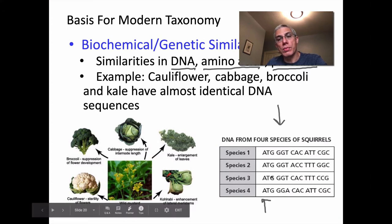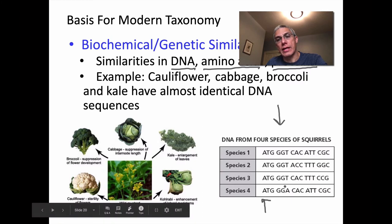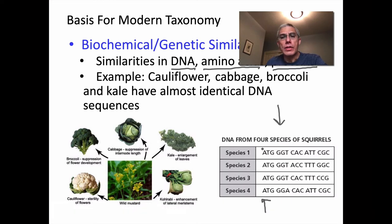When you do a genetic analysis you're looking at those four nitrogen bases and their sequence. For these four species, the first three nitrogen bases — adenine, thymine, and guanine — are exactly the same for all four. Looking at the next set of three — guanine, guanine, and thymine — species one, two, and three are the same, but there's a deviation for species four. The more closely related two species are, the more similarities you'll find in the sequence of those nitrogen bases.